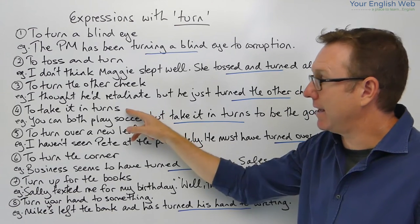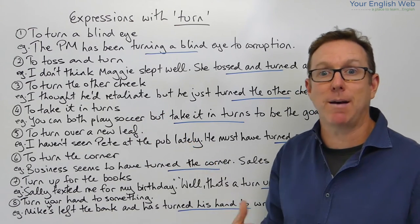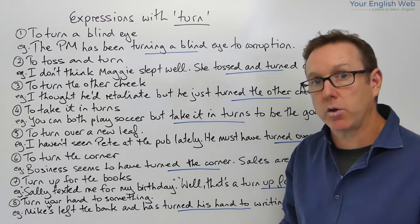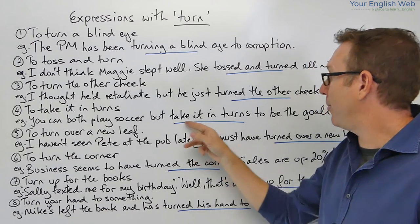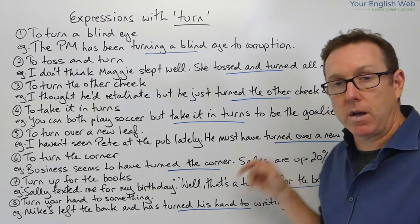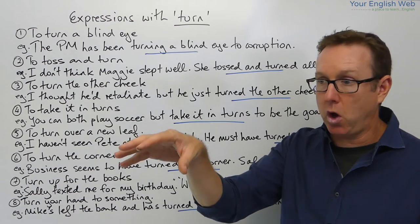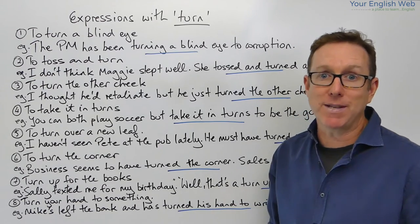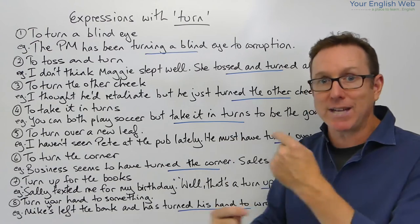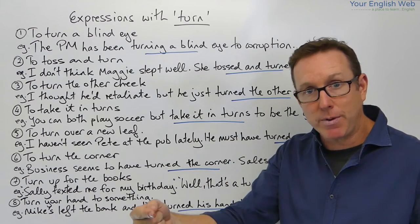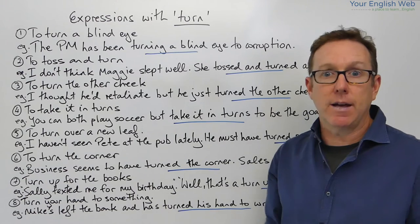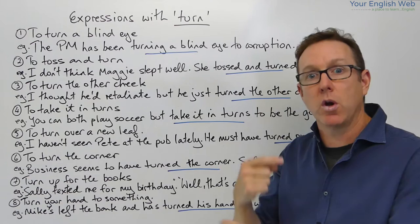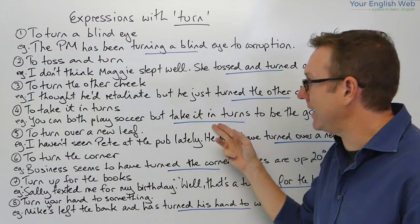The next one is to take it in turns, or to take something in turns. Through context: you can both play soccer, but take it in turns to be the goalie. This means you go goalkeeper first, then change and the other person goes goalkeeper. So you take it in turns — you rotate. One person is goalkeeper, then you change and somebody else becomes the goalie.